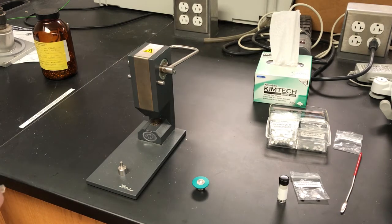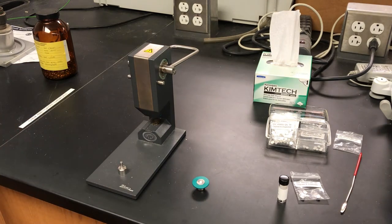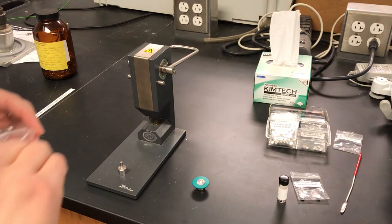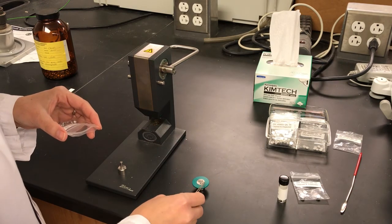So I just put the sample pan down. And at this point, if we were running a sample, we would put the sample in. And then the lid goes in, goes on top with the concave side down.